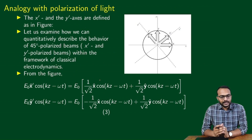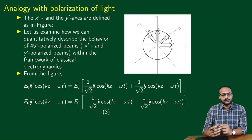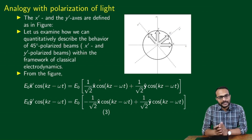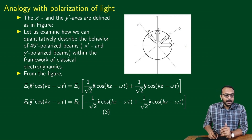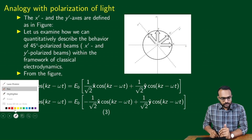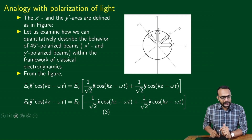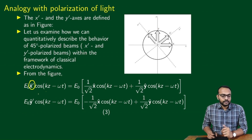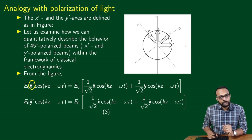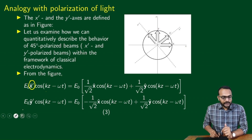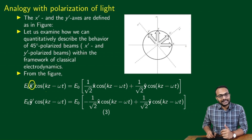Let us now understand the qualitative description of the behavior of polarization within the framework of classical electrodynamics — not using the language of photons or quantum mechanics, just classical electrodynamics. A light beam polarized in the X' direction can be represented as E₀ X̂' cos(Kz − ωt). The X̂' here says that the oscillation of the electric field is in the X' direction — this is an X'-polarized beam.